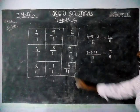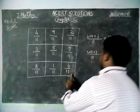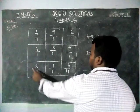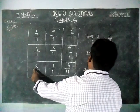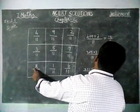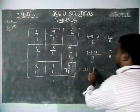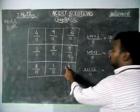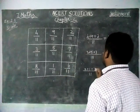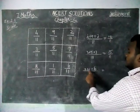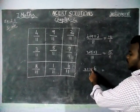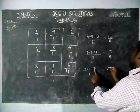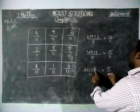The same thing for the third row — common denominator 11. 8 plus 1 plus 6: 8 plus 1 is equal to 9, 9 plus 6 is equal to 15 by 11.